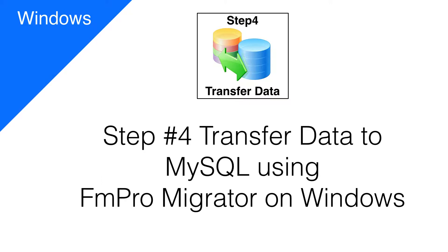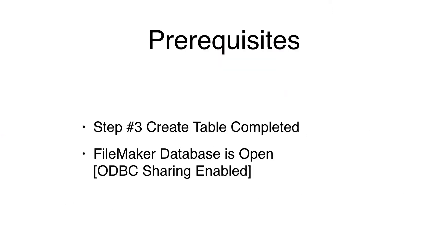During step number four, FM Pro Migrator transfers data from FileMaker into the MySQL table created during step number three. To complete this task, you should have created the table in the MySQL database during step number three. The FileMaker database must be open, and ODBC sharing must be enabled.